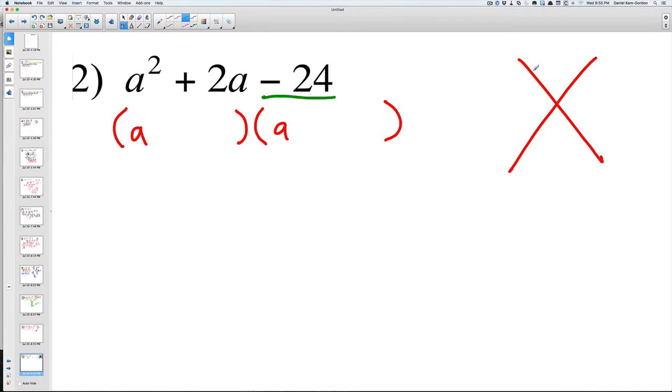These equations here, you have a squared plus 2a minus 24. Since there is no coefficient in front of the a, it's just going to be a, and then it's going to be a. We know there's going to be some numbers in here, we just don't know what they are going to be.